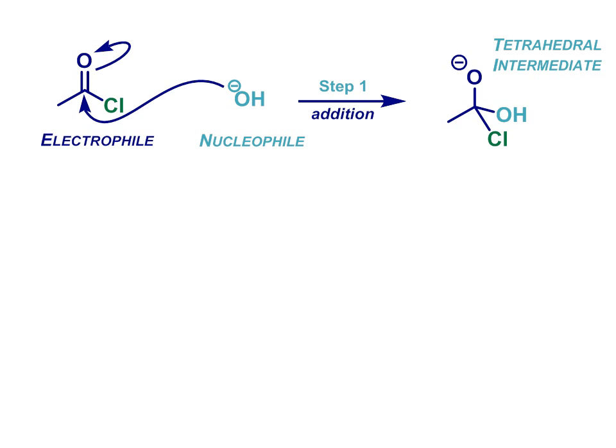Because we've gone from sp2 trigonal system in the starting material to sp3 hybridization at that central carbon atom in this intermediate. Now, in contrast to the reaction of an aldehyde or ketone, the tetrahedral intermediate has a different pathway open to it. It can reform the carbonyl system, expelling chloride as a good leaving group, as shown here, because this is exactly what happens.